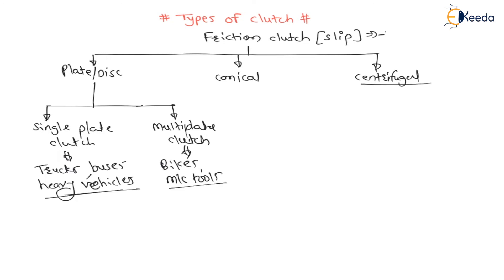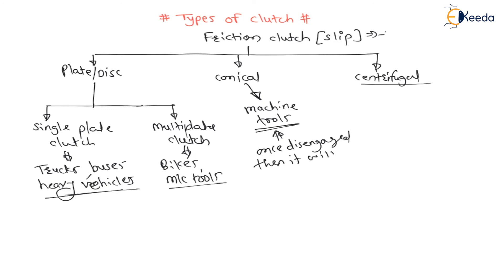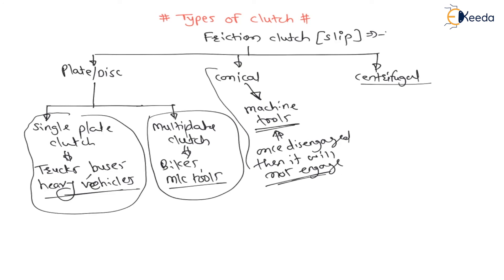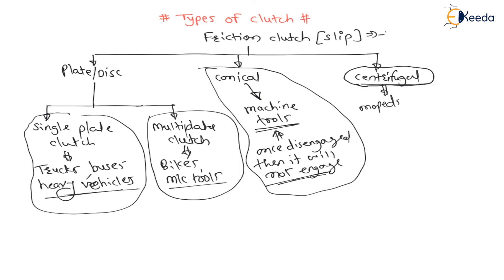The conical clutch is used in machine tools basically. Interestingly, when this clutch is disengaged, it will not re-engage — once disengaged, it will not engage again. For the centrifugal clutch, it operates with the help of centrifugal force due to centrifugal action, and these are used in mopeds as well as small electrical motors or electrical vehicles.